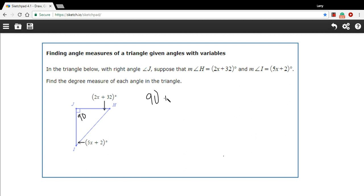plus 5x plus 2 plus 2x plus 32 equals 180 degrees.